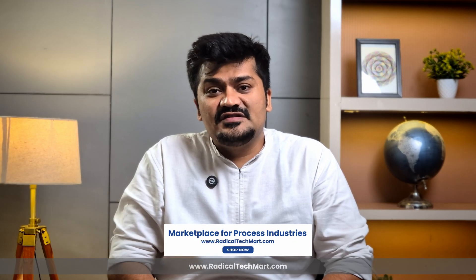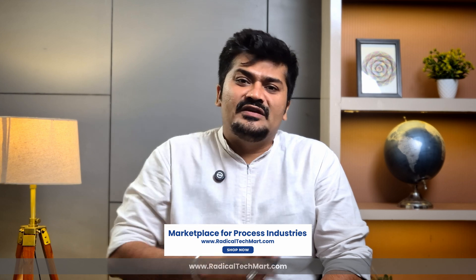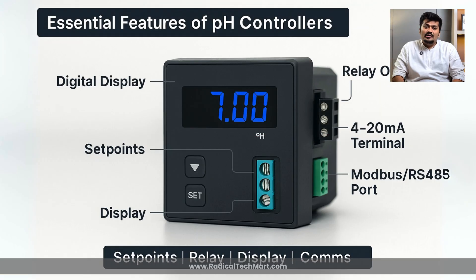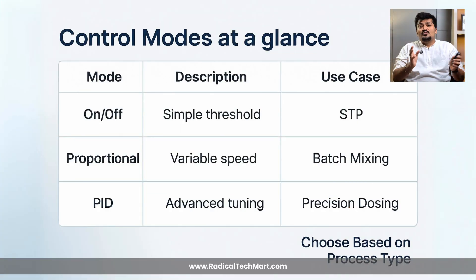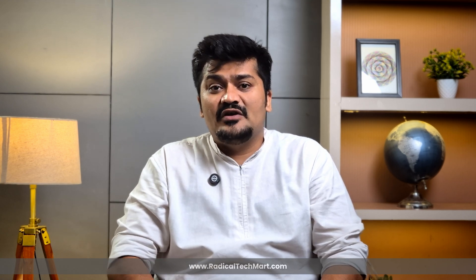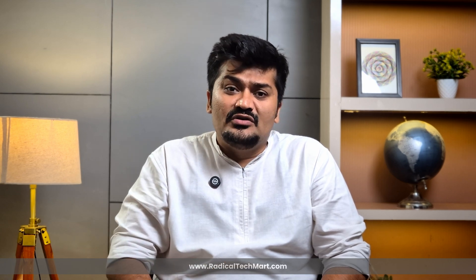Now let's cover key features and outputs. A good pH controller includes standard features like: setpoint configuration with upper and lower pH limits; relay outputs to control pumps, valves and buzzers; a digital display showing real-time pH reading; control modes like on/off, proportional or PID; and analog output options like 4-20 mA, Modbus or RS485 for PLC or SCADA integration. Quick tip: always check if the controller has a manual override mode, which is useful during maintenance or calibration.